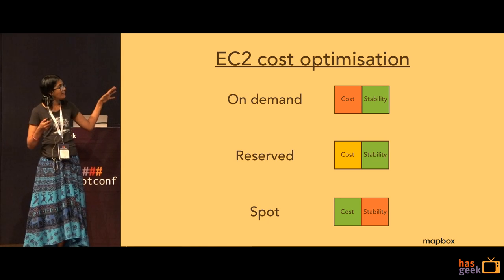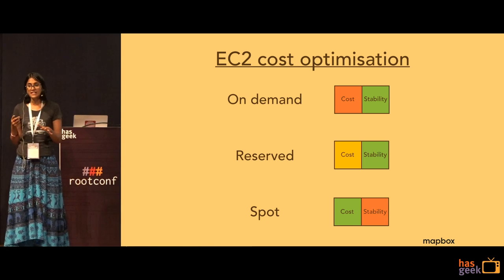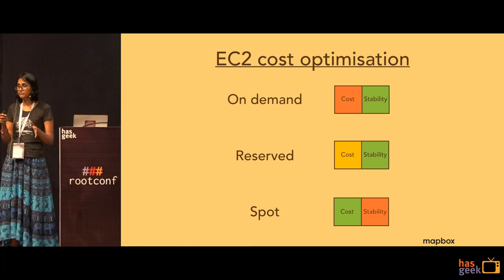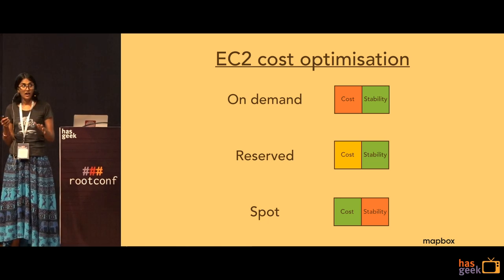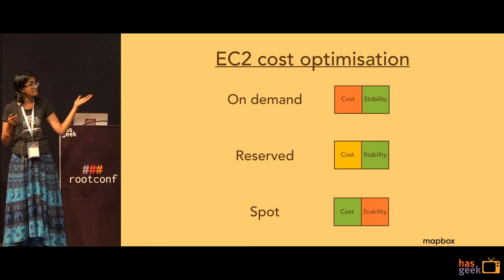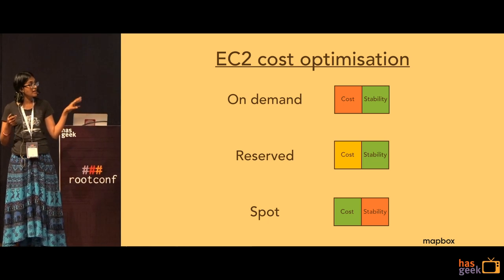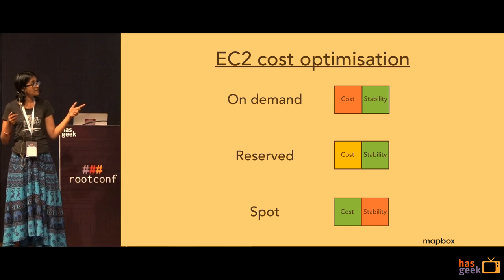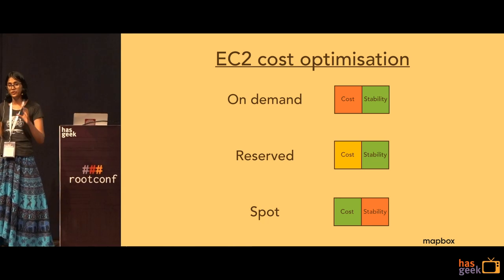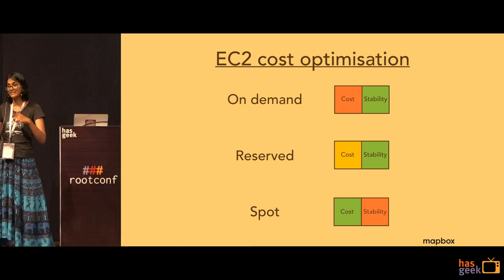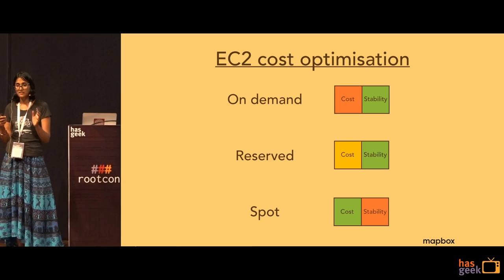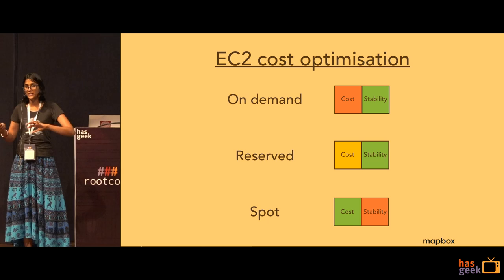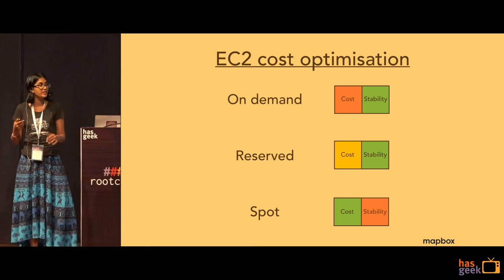Secondly, you have reserved instances. These are medium range in cost — about 50 to 70 percent the cost of the on-demand instance — and again, very stable. You pay for these instances by reserving them for a certain number of hours in advance, so you do run the risk of reserving an instance for longer than you need it.